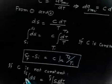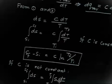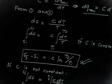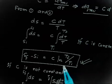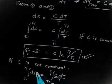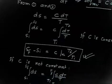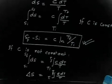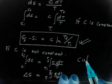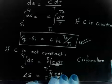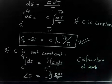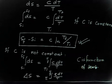So ΔS = C ln(Tf/Ti). Note that C has been taken outside the integral — this is only valid if C is constant. If C is not constant and is a function of temperature, I would write the integral as ∫C(T) dT/T from Si to Sf, plug in C as a function of temperature, and then integrate.